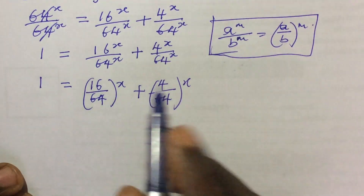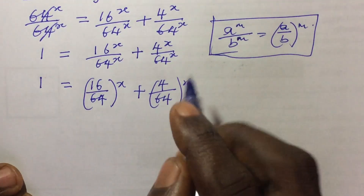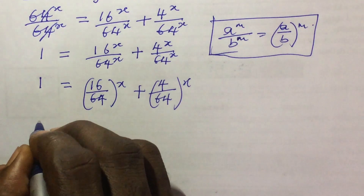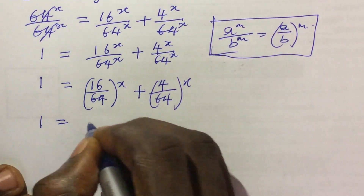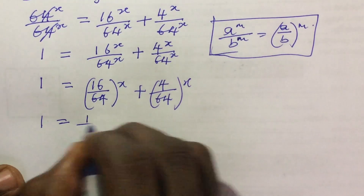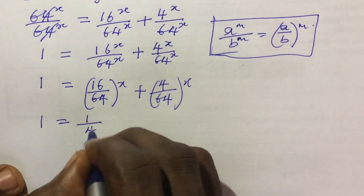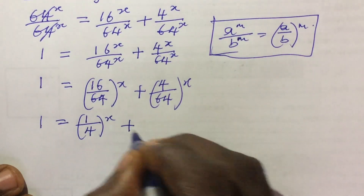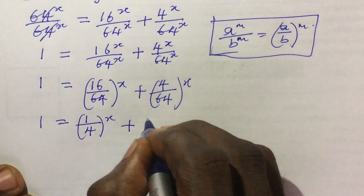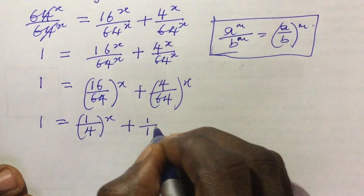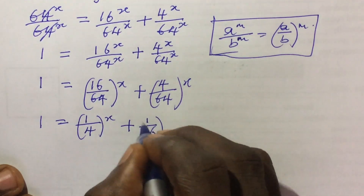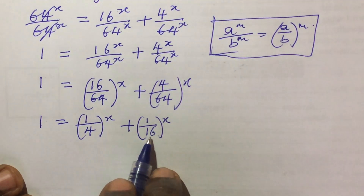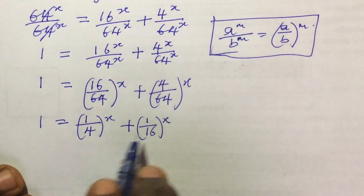Now from here we can use 16 to divide 64, that will give us 4, and 4 into 64 will give us 16. So we can rewrite this to give us 1 equal to 1 all over 4, all to the power of x, plus 1 all over 16, all to the power of x.